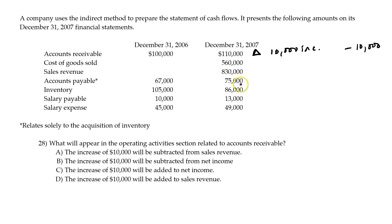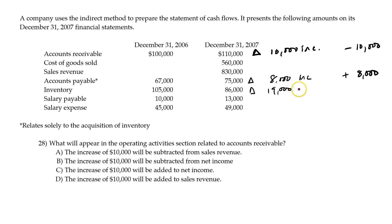Accounts payable — the change is an $8,000 increase. Increases in current liabilities are additions to the statement of cash flows. Inventory is a current asset, and in this case the change is a $19,000 decrease. Decreases in current assets are added back in the statement of cash flows.